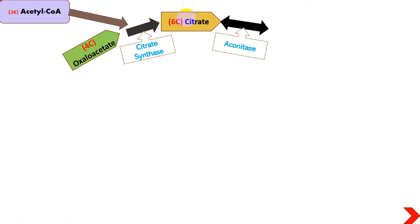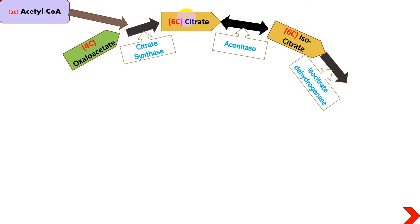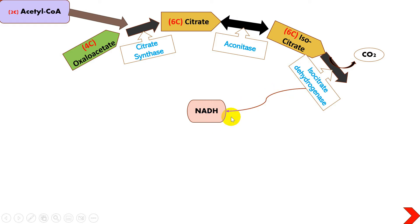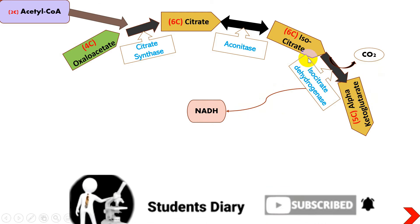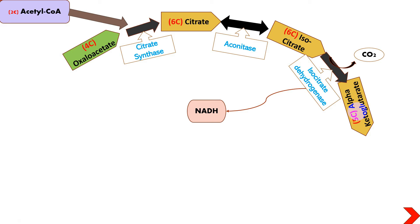The six-carbon citrate molecule, with the help of aconitase enzyme, is converted into isocitrate. That isocitrate is then acted upon by isocitrate dehydrogenase, where decarboxylation takes place — one carbon is removed. Along with the dehydrogenase enzyme, one NADH molecule is released. This is the first NADH, which will be cashed later in the electron transport chain. Isocitrate is thus converted into the five-carbon molecule alpha-ketoglutarate.